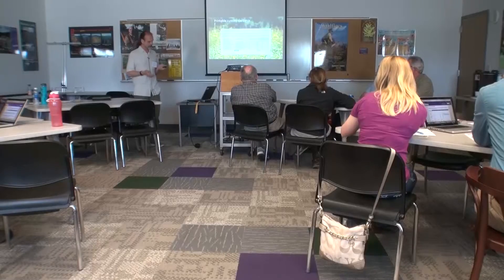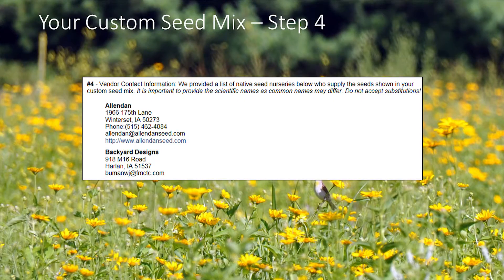The reset button resets any adjustments you made to the seeding rates and takes you back to the custom seed mix page with that reset. Step four basically lists the vendors participating in our database — quite a list, eight to twelve vendors — and we include their contact information and whatever details they have available.